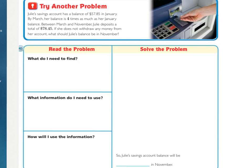Now, we're going to try another problem. So, Julie's savings account has a balance of $57.85 in January. By March, her balance is four times as much as her January balance. Between March and November, Julie deposits a total of $78.45. If she does not withdraw any money from her account, what should Julie's balance be in November? For, squiggle underline what you're being asked to find, circle the important numbers, and underline any other words that will help you know what operations that you need to do.